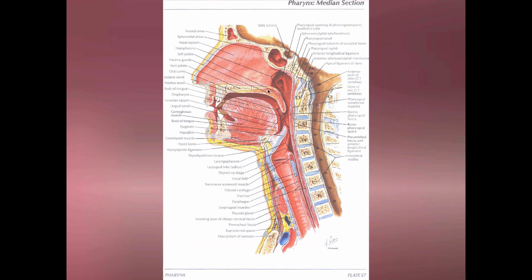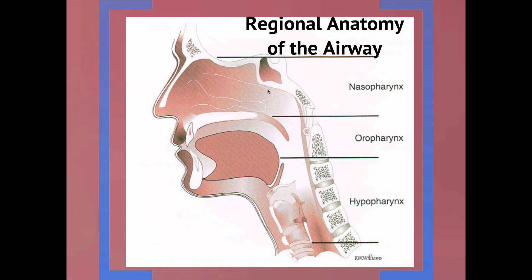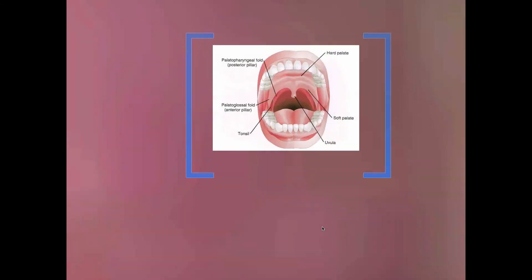This slide shows where we break the different pieces of the upper respiratory system. The nasopharynx is delineated by the hard palate. The oropharynx runs from the hard palate to essentially the top of the epiglottis. And the hypopharynx is the epiglottis and all parts inferiorly. Those are important demarcation points to know.